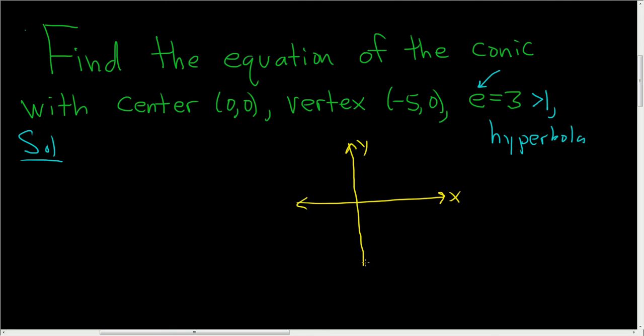So in this problem, the center is (0,0). The vertex is (-5,0), so here's negative 5. And this is a hyperbola, so the vertices actually lie on the hyperbola, so the other vertex is over here. Because the vertices lie on the hyperbola and we know that the center is (0,0), our hyperbola has to look something like this.